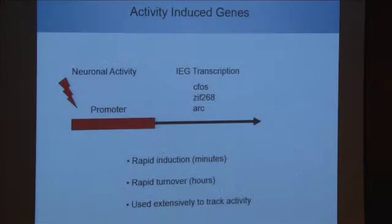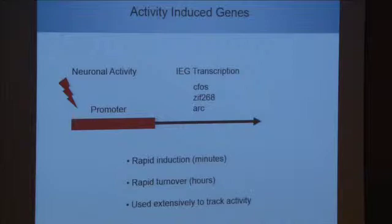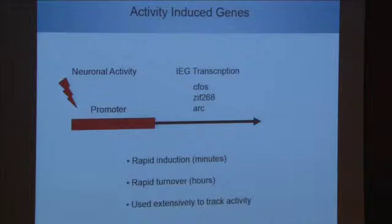So how do we do that? The approach we're taking is to use a genetic manipulation in genetically modified mice. Mice are great — you can put genes into them, you can manipulate their genome with great ease. One of the genes we were interested in is actually a group of genes that have been known for about 30 years. Neuroscientists have used their expression as a surrogate marker for neural activity.